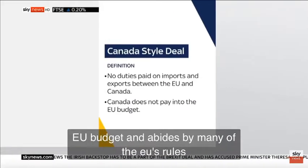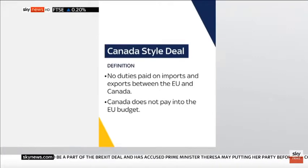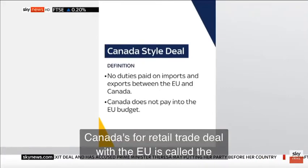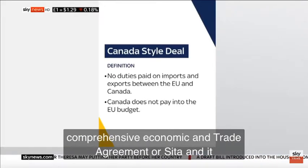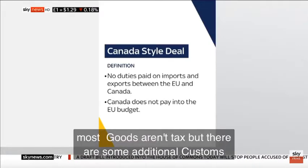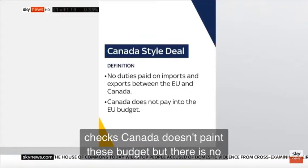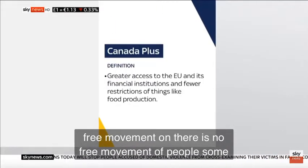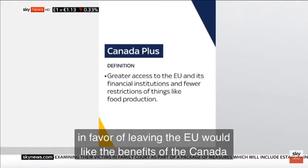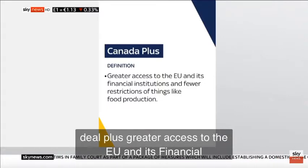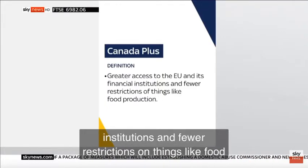Canada's free trade deal with the EU is called the Comprehensive Economic and Trade Agreement or CETA, and it means that most imported goods aren't taxed, but there are some additional customs checks. Canada doesn't pay into the EU's budget and there is no free movement of people. Some people in favour of leaving the EU would like the benefits of the Canada deal plus greater access to the EU and its financial institutions, with fewer restrictions on things like food production to avoid the need for border checks.